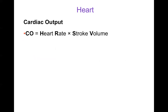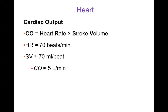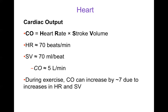Cardiac output, or CO, is heart rate times stroke volume. Heart rate is a frequency — for example, 70 beats per minute is typical. Stroke volume is about 70 milliliters per beat typically. Multiplying those gives a cardiac output of about five liters per minute, which is a typical blood flow from the heart. During exercise, cardiac output can increase by a factor of about seven at maximum, due to increases in both heart rate and stroke volume.